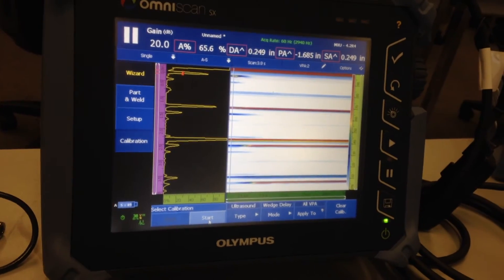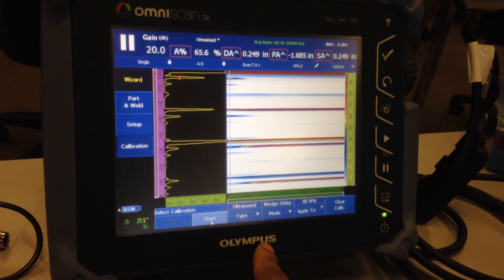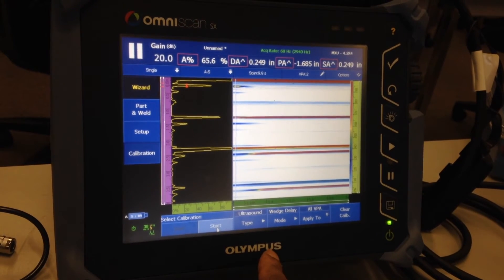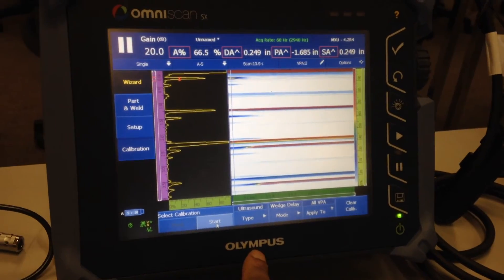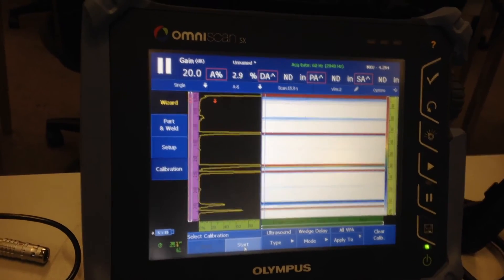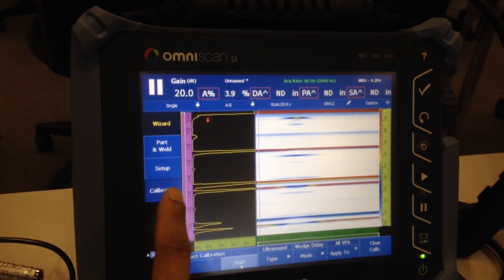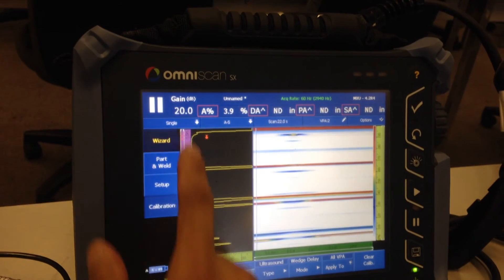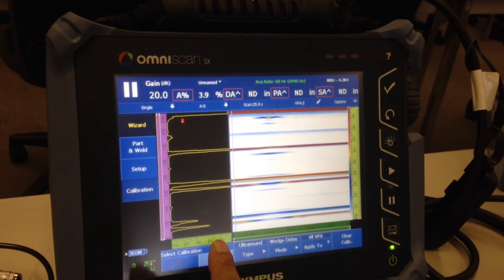The next thing I want to do is a sensitivity calibration. Now for a sensitivity calibration, it just depends on the type of inspection you're going to do in the field, but in this case let's just practice a sample sensitivity setting. So in this case I'm going to play with my gain and get my second back wall to 80% screen height.